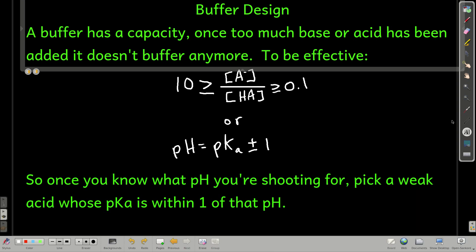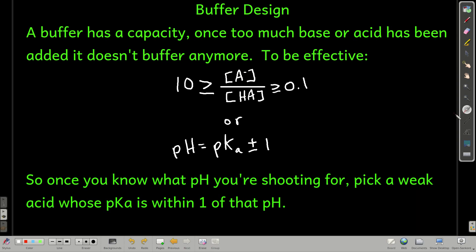Every buffer solution has a capacity. Once it runs out of either the conjugate base of the weak acid or the weak acid, then it doesn't act as a buffer anymore. Then when you add either the strong base or the strong acid, the pH just changes dramatically.